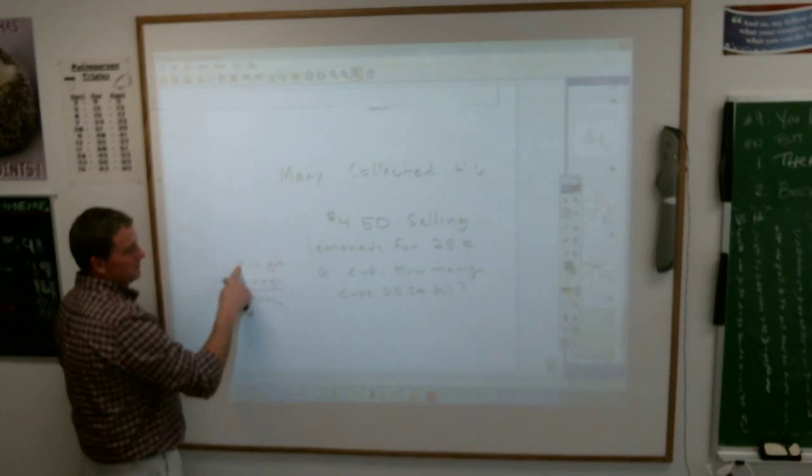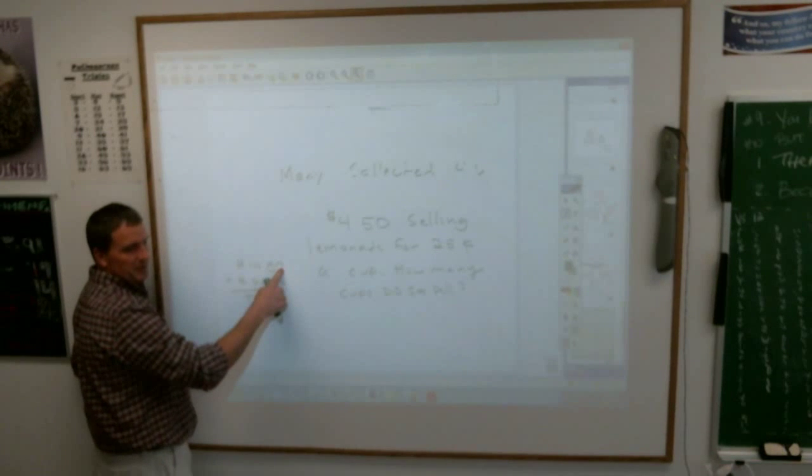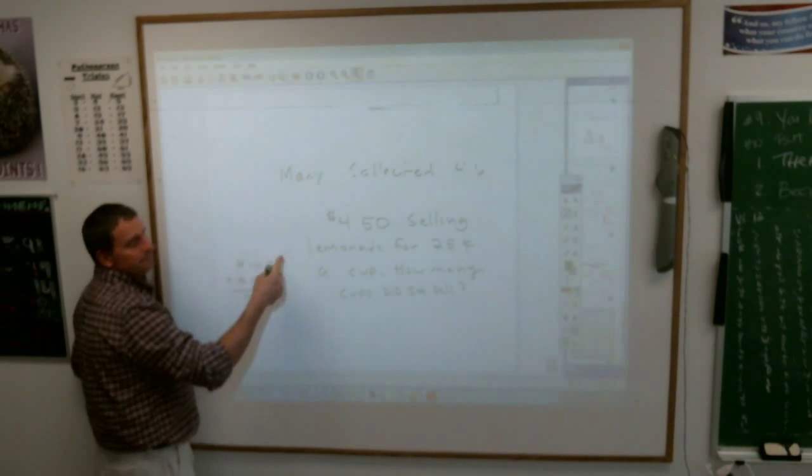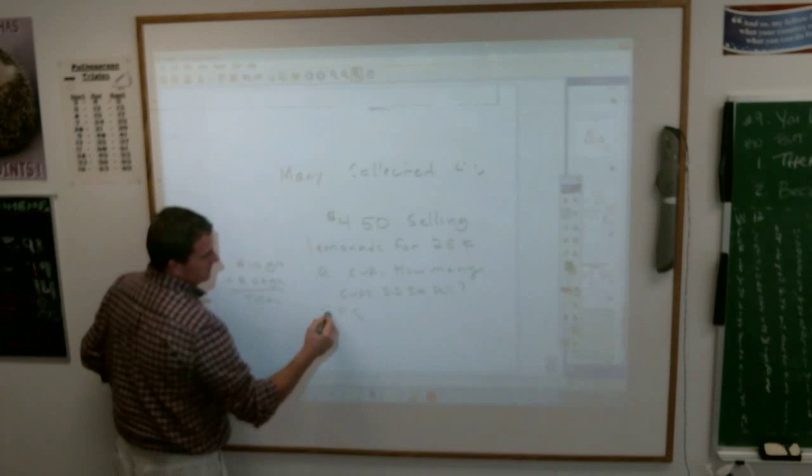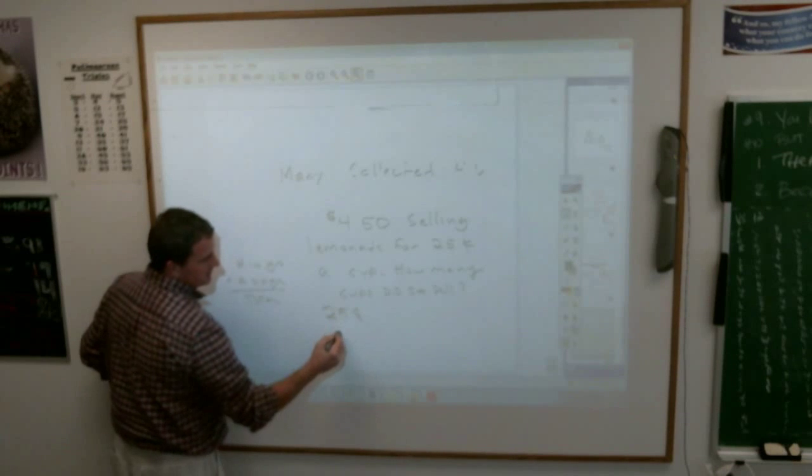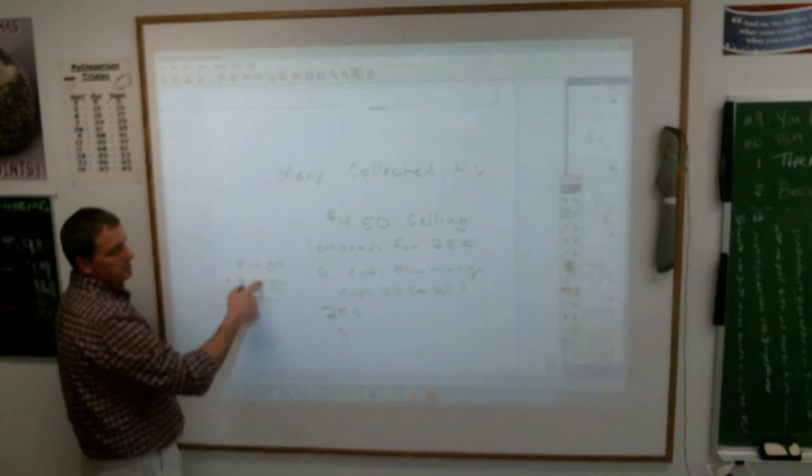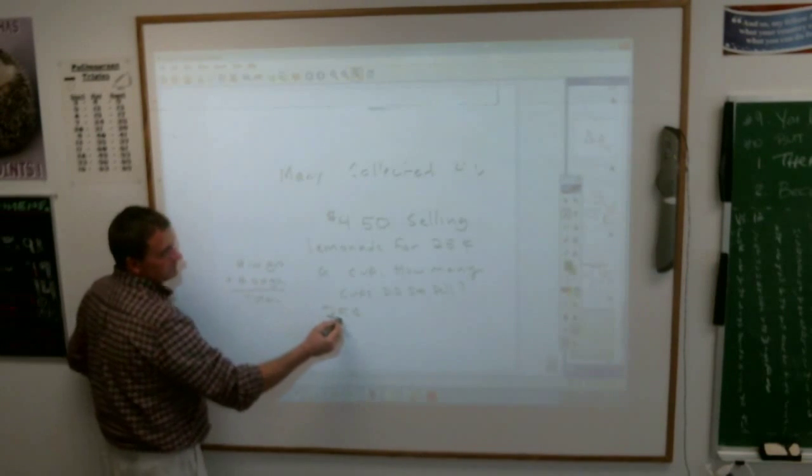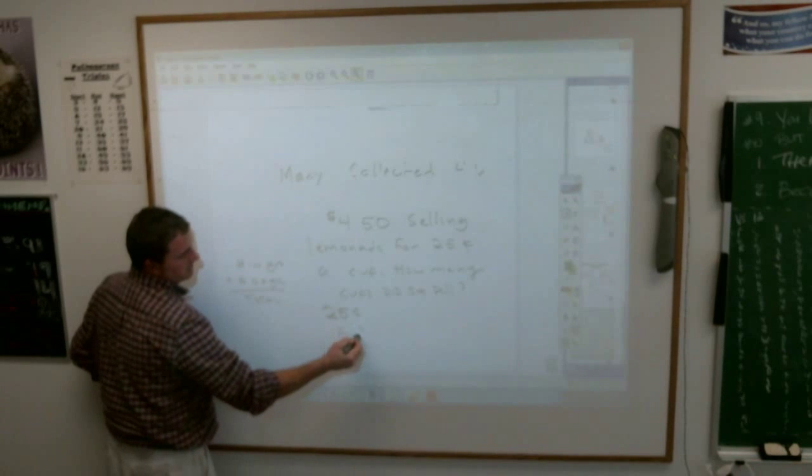So the question is, the number in each group, do I know how many groups? Do I know how much is in each cup? How much money do you get for each cup? $0.25. So $0.25. $0.25, great. $0.25 times, do I know how many cups I sold? I don't. That's my letter C. Do I know how much total I have?